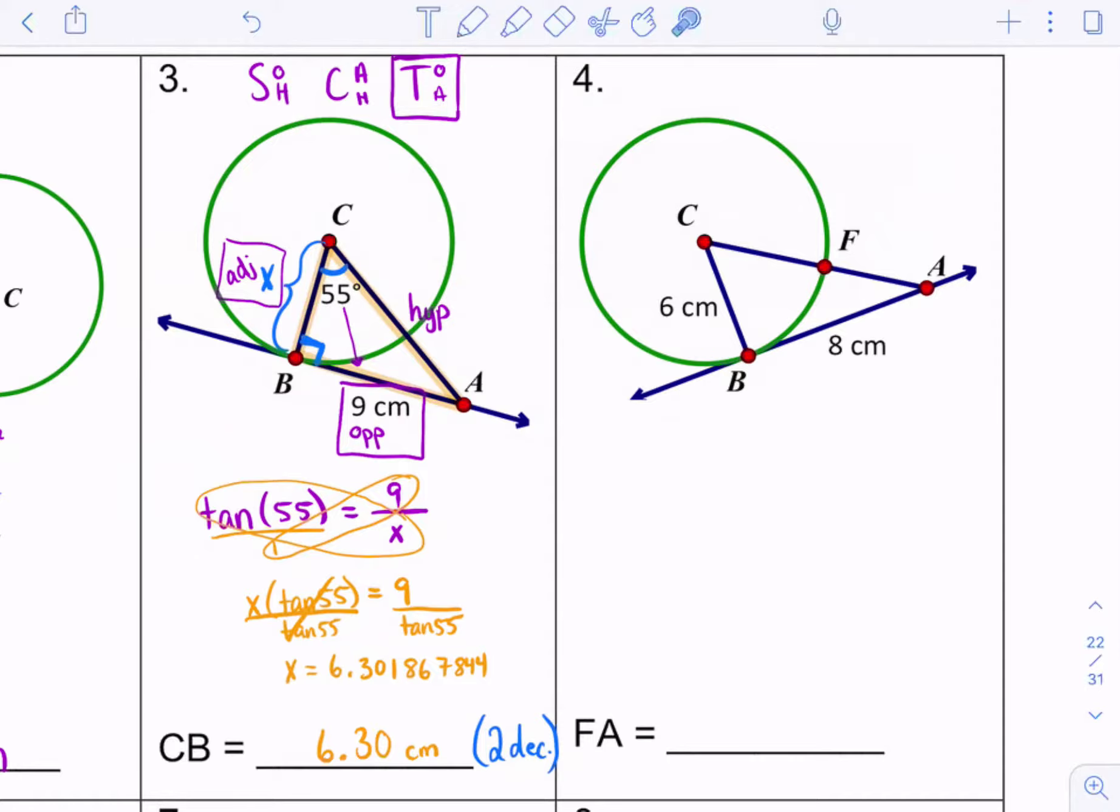Okay, number four. So this time, we're trying to find FA. Oh, that little segment. Yeah. And I see again, we're applying the same property of a tangent attached to a radius, forming a right angle. We have two sides of a right triangle. So we can find the entire hypotenuse using the Pythagorean theorem. Six squared plus eight squared equals the hypotenuse squared. Six squared plus eight squared is 100. And square root of 100 is a perfect 10. So that is giving us all of CA.